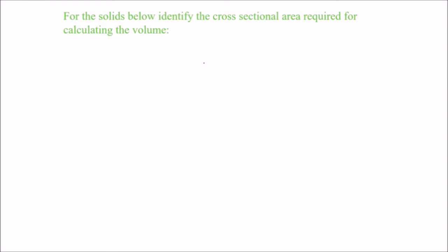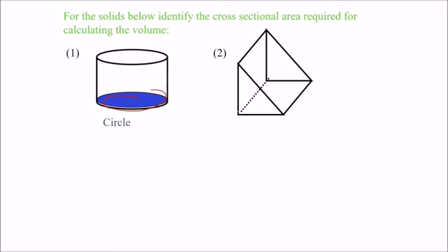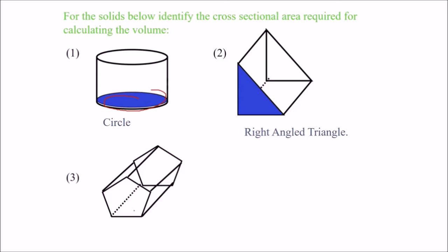Volume is nothing but the cross-sectional area into the length — this is a general formula. For the upcoming solids, the cross-sectional shapes are: a circle, a right-angle triangle, and a pentagon.